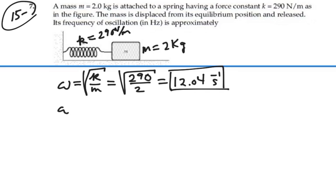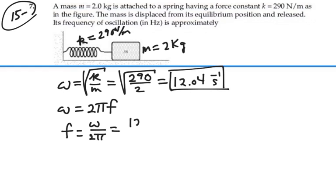Now we know by definition, the angular frequency is equal to 2π times the frequency. So the frequency is the angular frequency divided by 2π. That is going to be 12.04 radians per second divided by 2 times π, which gives us 1.92 hertz.